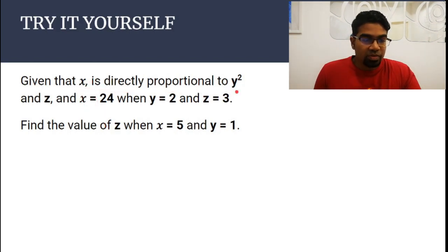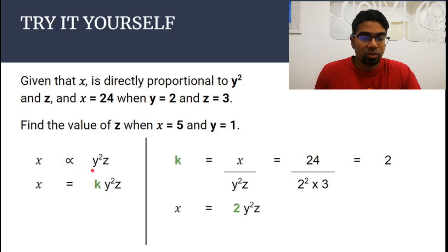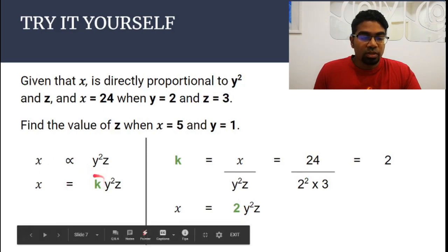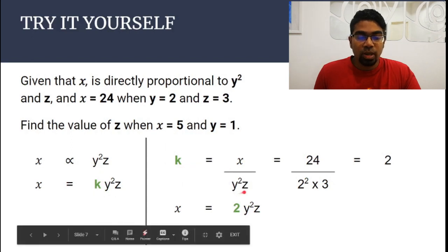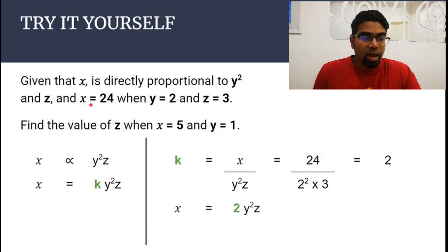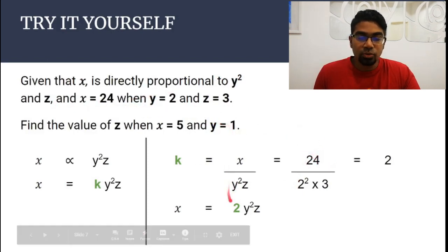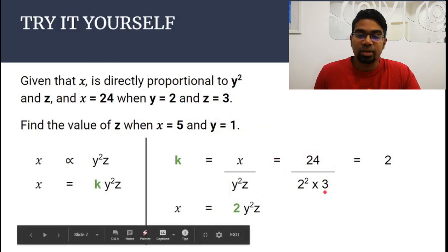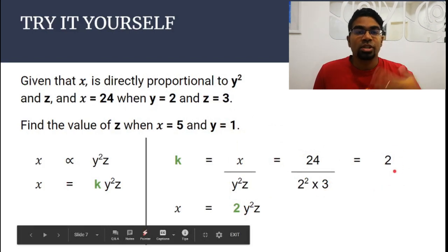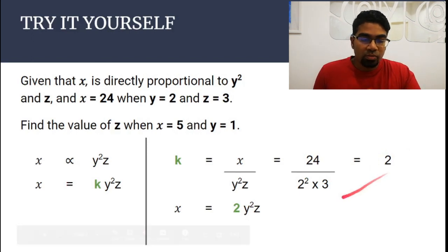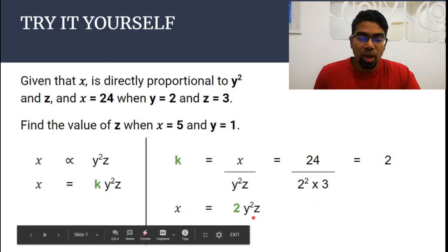So x is directly proportional to y squared multiplied by z. Then we insert the proportionality constant to make it an equation: x equals to k·y²·z. Rearrange to make k the subject: k equals x over y squared times z. Then we insert the given values — x is 24, y is 2 (so 2 squared), and z is 3. The answer you should get is k equals 2. Once we get the value of k, we substitute it back into the original equation, and we get x equals to 2y²z.